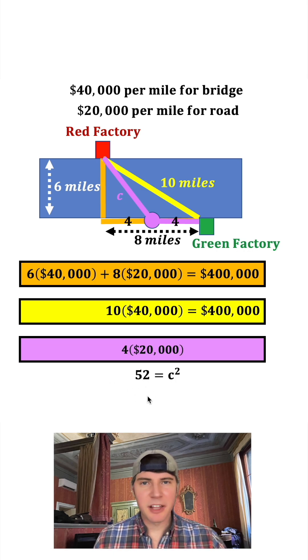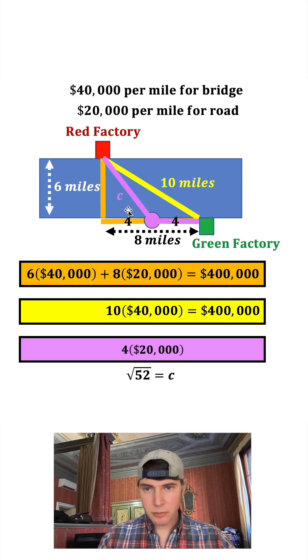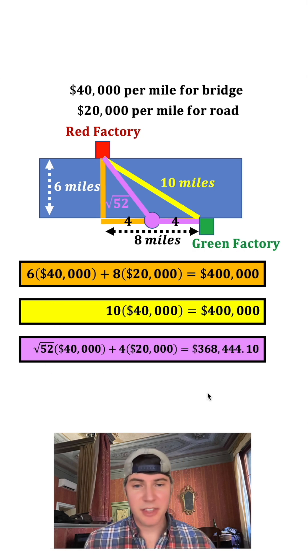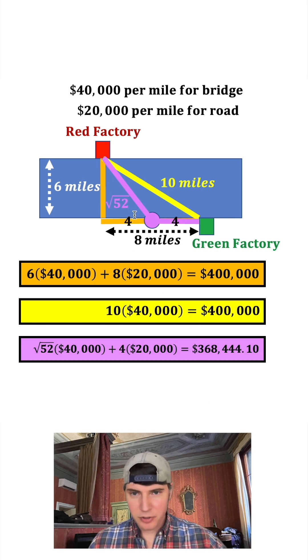Add them together we get 52. Square root both sides and we get c equals √52. So we can update our calculations to √52 times $40,000. All of this sums to about $368,444.10, so it would be more efficient to aim for the spot right in the middle.